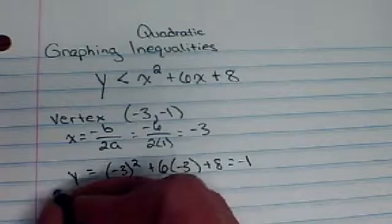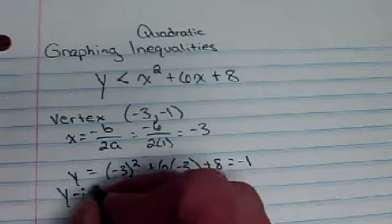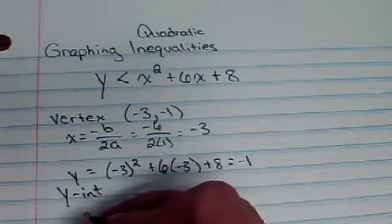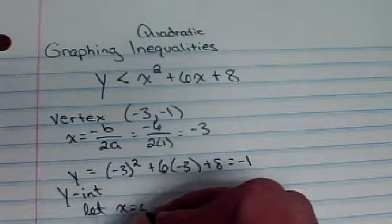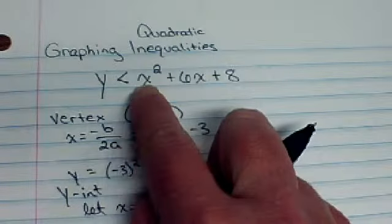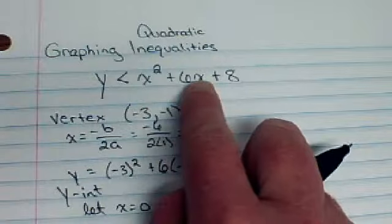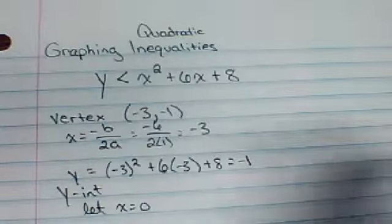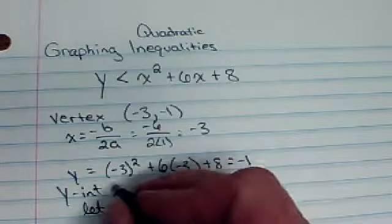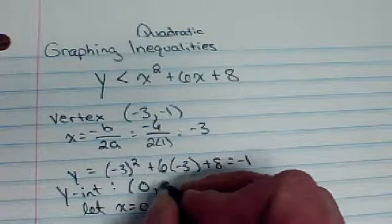The other easy point to find is our y-intercept. If we remember to find the y-intercept, you let x be 0. So remember what happens when I plug in 0 for each of those x's. Both of these terms go away, and you're left with just 8. So that's going to be the point 0, 8.